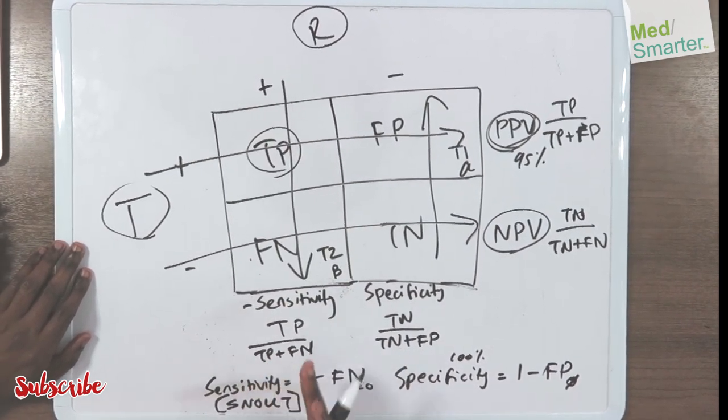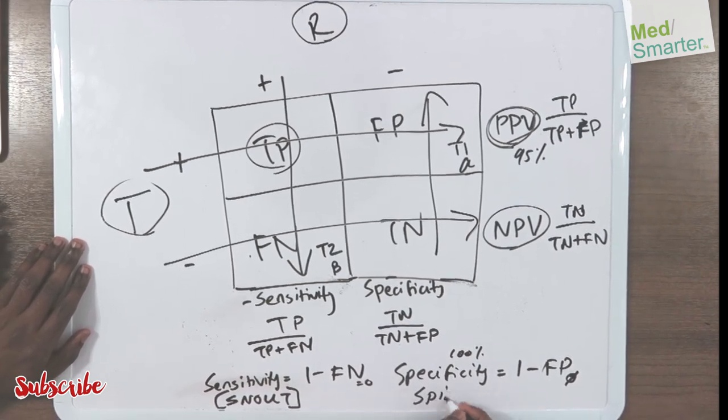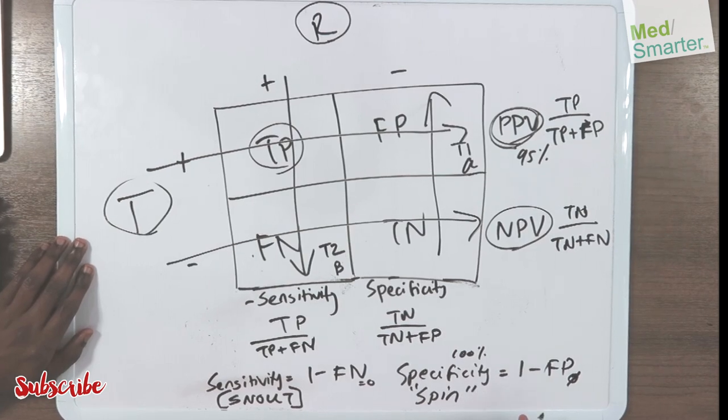If 100% of the people have it, then you can rule it in. And therefore that's why you get SPIN on your First Aid acronym.